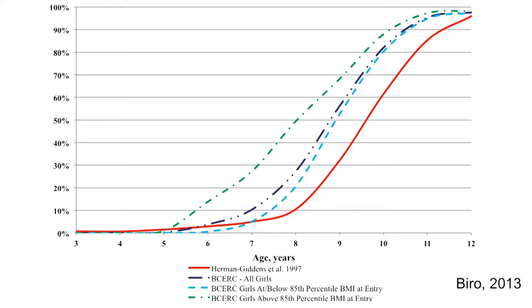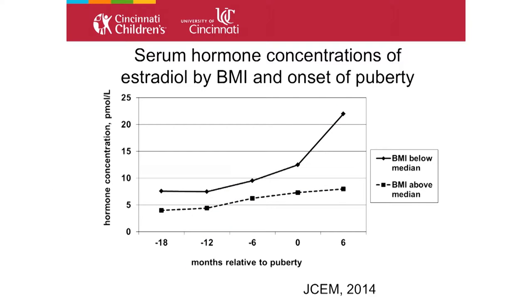Among overweight and obese girls — about 25-30% of our cohort — puberty is much earlier. When you look at girls at or below the median BMI, you see a very robust increase in estradiol levels as they go through puberty, but among obese girls there's a very blunted serum estradiol response. I would propose a couple of mechanisms: one is the effect of endocrine-disrupting chemicals acting as obesogens and leading to upregulation of tissue-level aromatase; and two, that the same reason obese postmenopausal women have higher rates of breast cancer may explain why these girls go into puberty earlier.